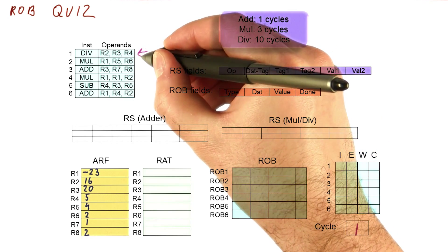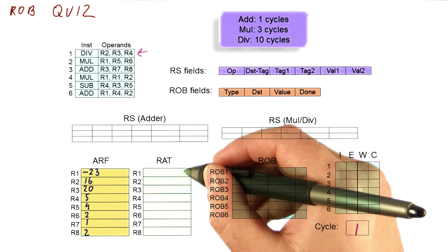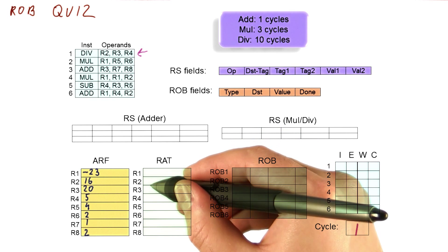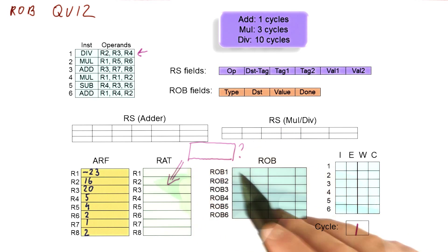we will try to issue this instruction. What is going to be the content of the RAT entry for R2? Put the value here. RAT entry for R3, put the value here.